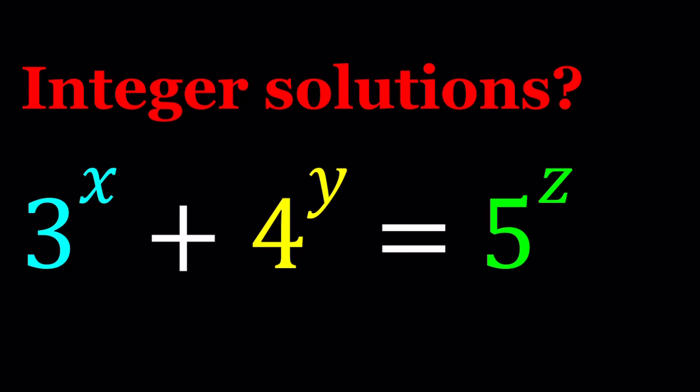Hello everyone. In this video, we're going to be solving a very nice exponential Diophantine equation. We have 3 to the power x plus 4 to the power y equals 5 to the power z, where x, y, and z are integers. That's why this is called a Diophantine equation. And we're going to be solving for x, y, and z.